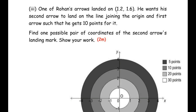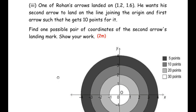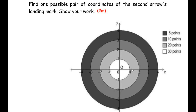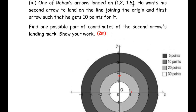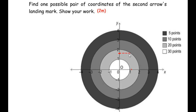Now the third sub question: one of Rohan's arrows landed on the coordinate (1.2, 1.6). He wants his second arrow to land on the line joining the origin and the first arrow such that he gets 10 points for it. Find one possible pair of coordinates of the second arrow's landing mark. On the grid, 1.2 is on the x axis and 1.6 on the y axis — slightly above the midpoint between 1 and 2 — so the point is approximately on the boundary. We will use the Pythagoras theorem to find the distance of this point from the origin.